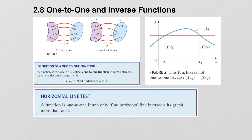Graphically speaking, you can see that a function is not one-to-one if two different x values have the same y value. And if they have the same y value, that means if you draw a horizontal line at those two points, you will hit the graph more than once. So for a function to be one-to-one, a horizontal line that you draw can only hit the graph one time.